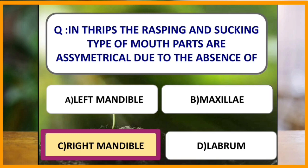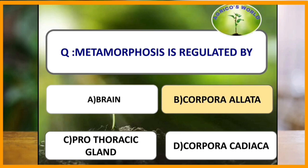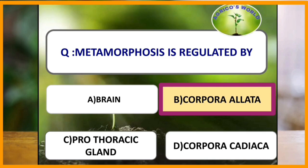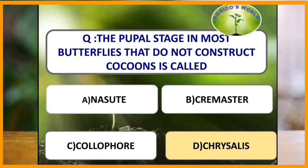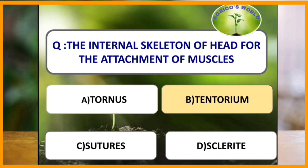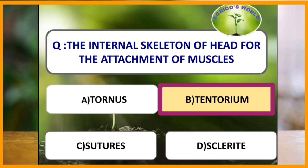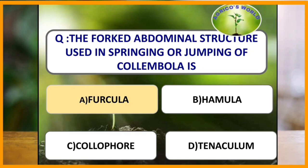Metamorphosis is regulated by which part of insect? Metamorphosis is regulated by corpora allata of the insect. The nymphs of Odonata are called naiads. The pupal stage in most butterflies that do not construct a cocoon is called chrysalis. The internal skeleton of the head for the attachment of muscles is the tentorium.